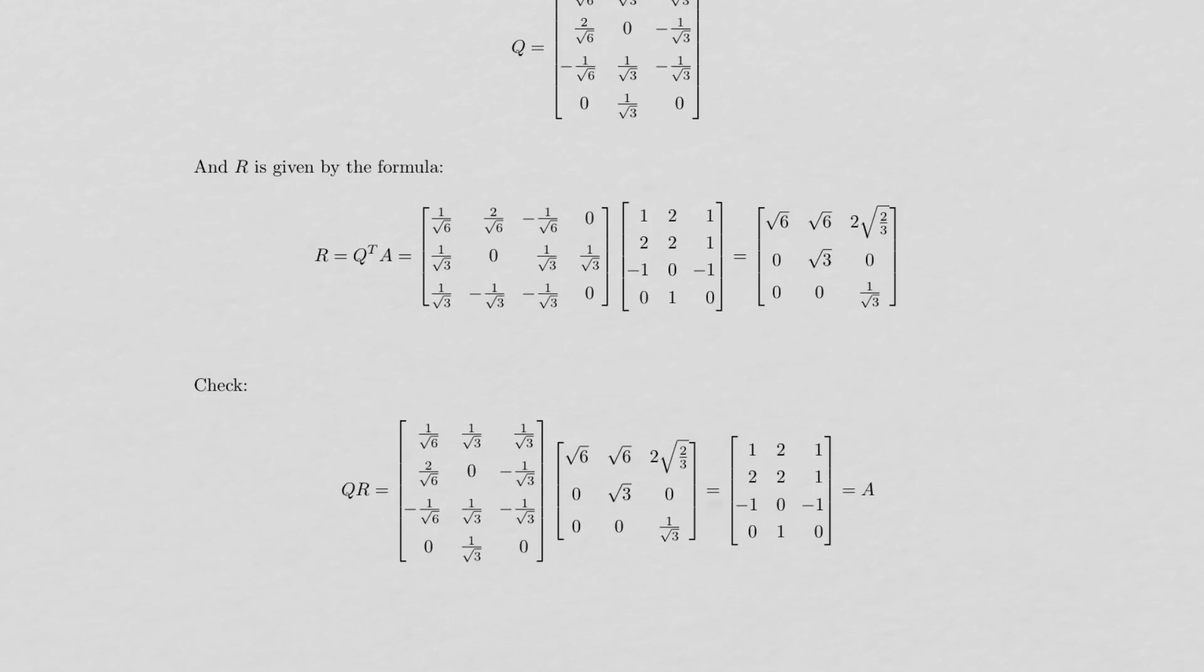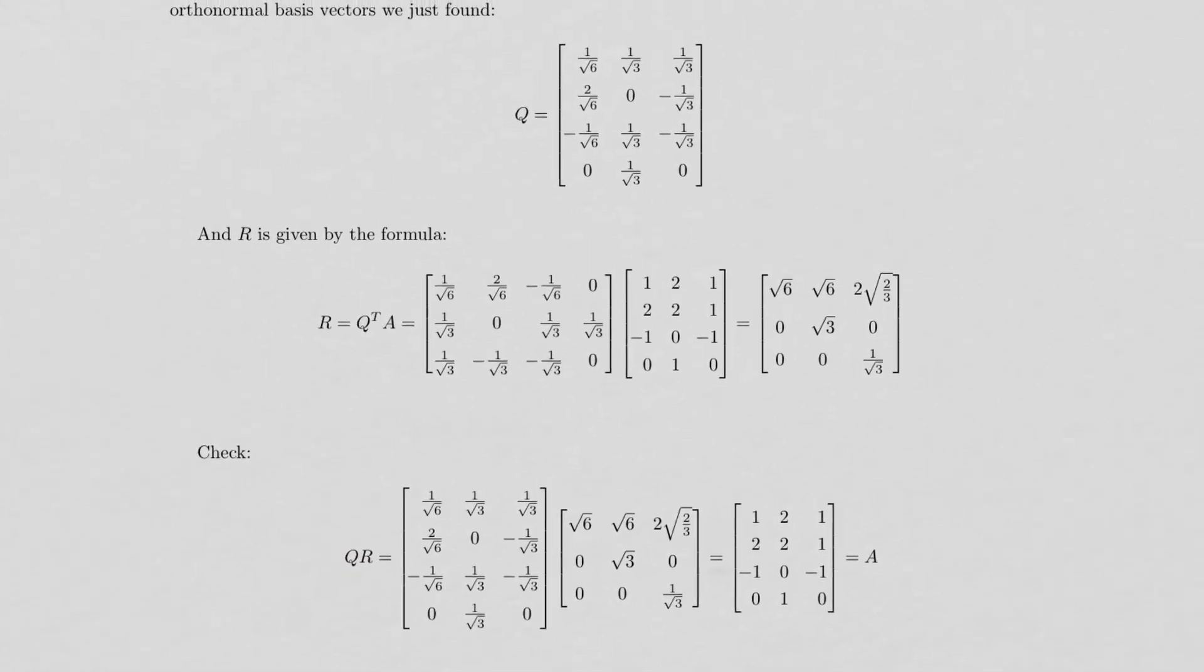And then here's R. You can check your work by multiplying QR. So take the matrix Q that you just got up here. Take R, multiply them, and you should get A, the original matrix. And we do. So that's confirmation that we did the calculations correctly. And indeed, this is a QR factorization of A.